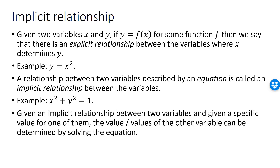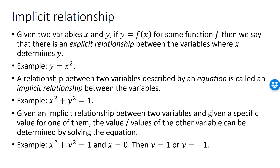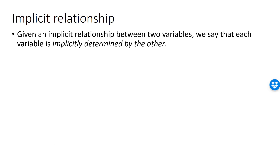Let's say we have an implicit relationship such as x squared plus y squared equal to 1. If we know the value of one of the variables — for example, x equal to 0 — plugging x equal to 0 into the implicit relationship gives us y squared equal to 1. This is an equation we can solve; the solution is y equal to 1 and y equal to minus 1. This is a general principle: given the value of one variable, the implicit relationship turns into an equation involving only the other variable that can be solved. For this reason, each variable is implicitly determined by the other.